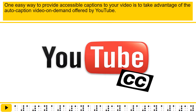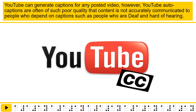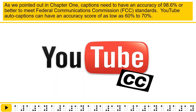One easy way to provide accessible captions to your video is to take advantage of the auto-caption video on-demand offered by YouTube. YouTube can generate captions for any posted video; however, YouTube auto-captions are often of such poor quality that content is not accurately communicated to people who depend on captions, such as people who are deaf and hard of hearing. As we pointed out in Chapter 1, captions need to have an accuracy of 98.6% or better to meet Federal Communications Commission standards.